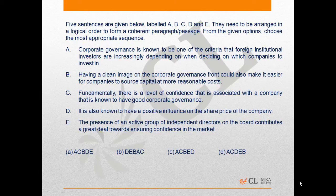Let us look at question number 73. This is again a question on para jumbling and it introduces a topic called corporate governance. All of these statements are related to corporate governance — how it is important and what its advantages are. We just have to find the appropriate sequence.